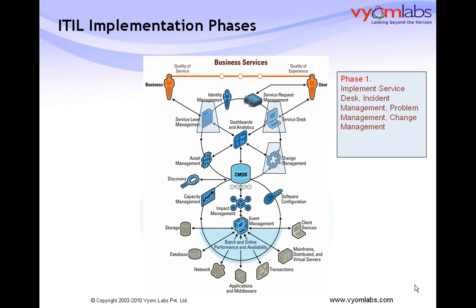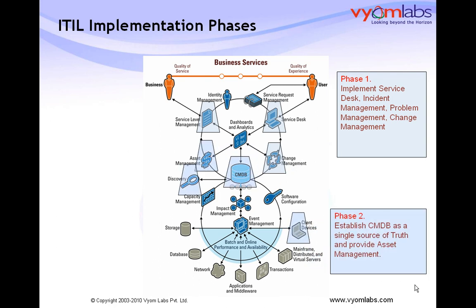In Phase 1, an organization can take initiatives like putting a service desk in place and having Incident, Problem, and Change Management processes streamlined by defining the processes, having the tool, and institutionalizing these things in the organization. Once these basic things are in place, in Phase 2 the ITIL project you can take is having the CMDB as a single source of truth and providing asset management for the organization. CMDB can be updated manually or automatically.